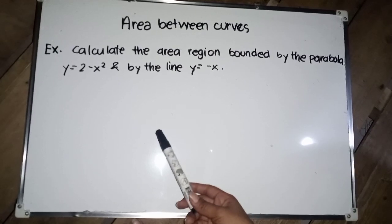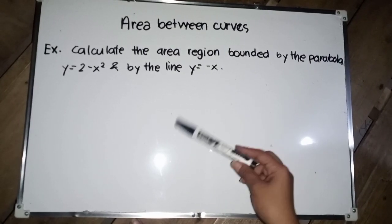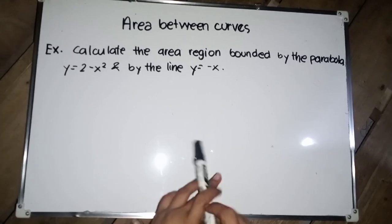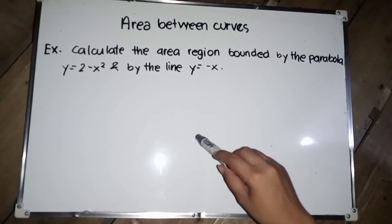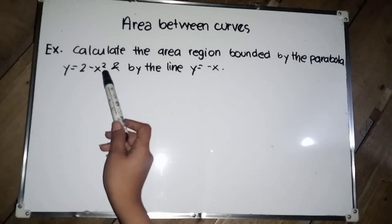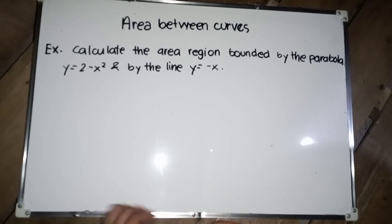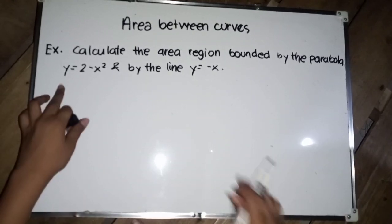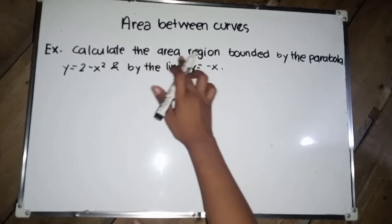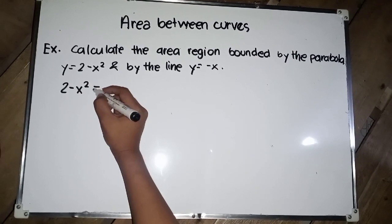the areas used — the curve can assume positive and negative values. Let's have an example: calculate the area of the region bounded by the parabola y = 2 minus x squared and the line y = negative x.